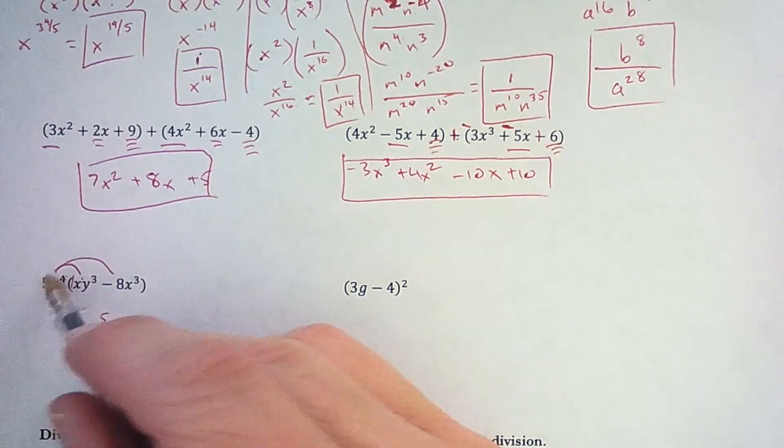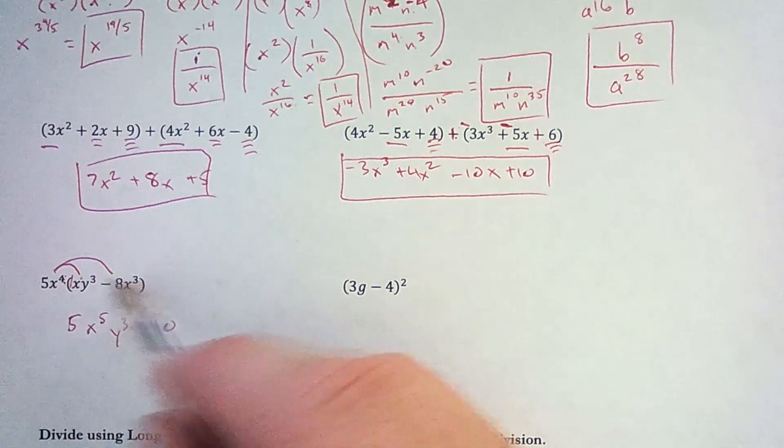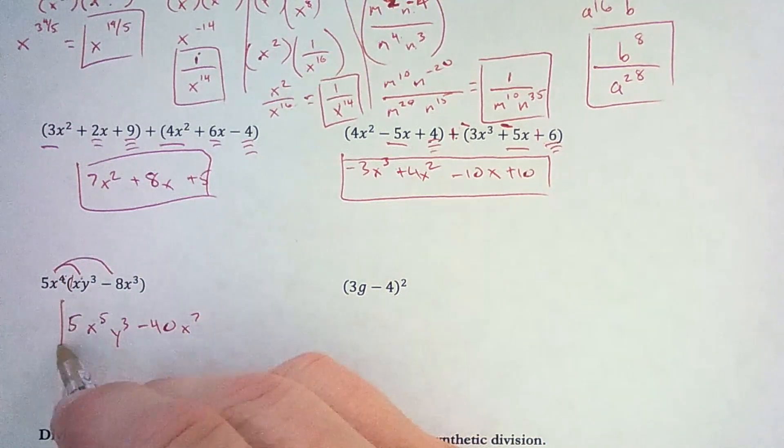And then here, 5 times negative 8, that's negative 40. And I add the exponents. 4 plus 3 is 7. So x to the 7th power.